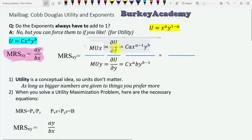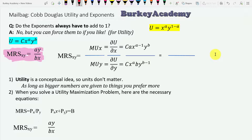When you take the partial derivative of the utility function with respect to x, you get C·a·x^(a−1)·y^b. When you simplify all this, you see that the constant is going to go away. What that tells us — if you believe that the utility function doesn't really matter and it's marginal rate of substitution that matters for predicting choices — is that constant doesn't really matter. So we don't need it; it's unnecessary and we can just get rid of it.